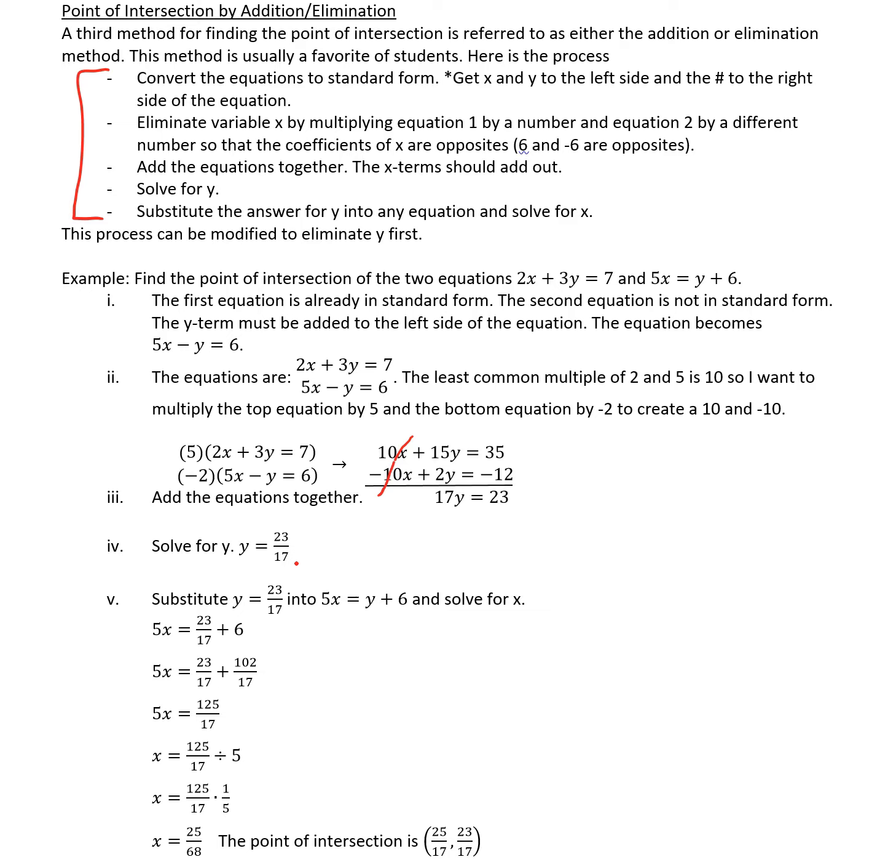Now that I know what y is, I need to find out what x is. So I can use any equation from up above to try to figure out what x is. I chose to use the second equation as I'm solving for x and this equation says 5x equals, so it'll be easier to solve for x with this equation. What I do is I substitute the 23 17ths in for the y, 5x equals 23 over 17 plus 6. When adding fractions, I need a common denominator. The 6 is converted to 102 over 17. Then I add the numerators, which gives me 125 over 17.